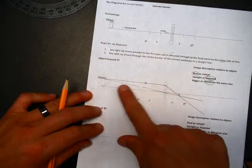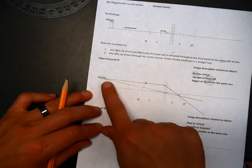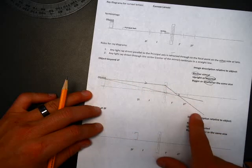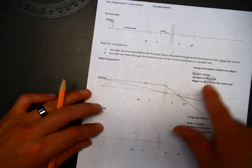Vertex - straight line. If it goes parallel to the principal axis, it goes through the focal point on the other side of the lens. Thank you.